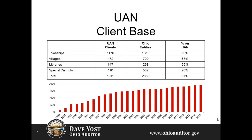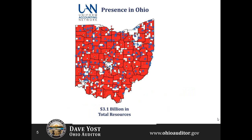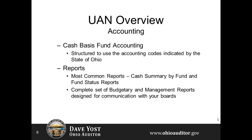Looking at a map of the state of Ohio, UAN usage by local government entities would just about cover the entire state, with townships and villages represented by the areas in red, and blue icons indicating libraries. UAN is used to issue $393 million in payroll and service 30,000 employees — which, if considered as a whole, would make UAN the fifth largest employer in the state of Ohio — with $3.1 billion in total resources managed within UAN.